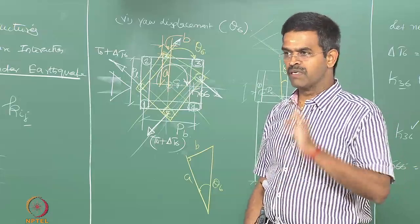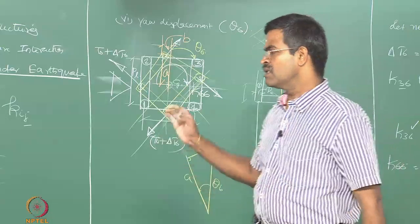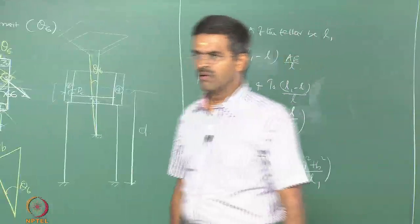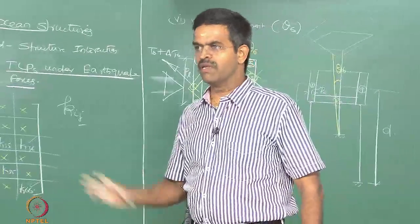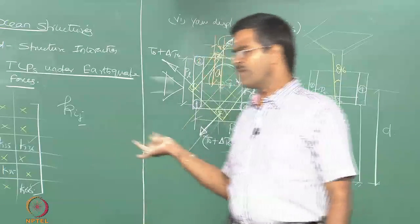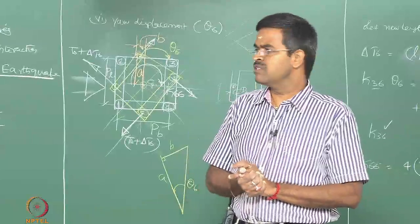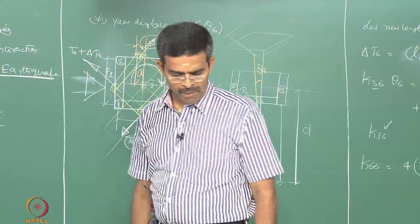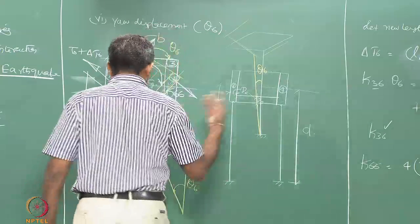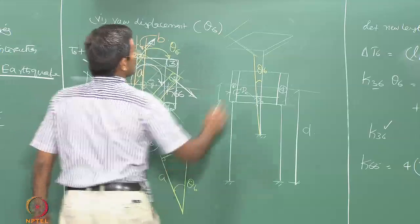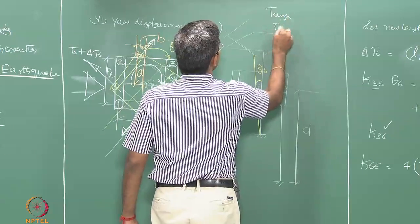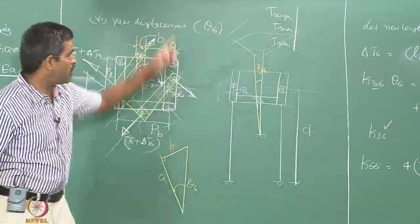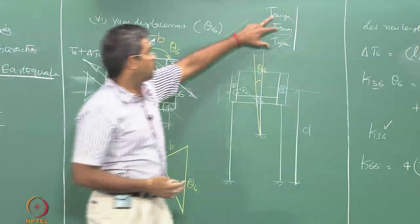Therefore, it is very interesting from the design perspective: TLPs will never get into the resonance band at all. TLPs will never be in resonance. But how do TLPs fail? That is what we will discuss. Because it is a sweeping omega, TLP natural frequencies in surge, sway, and yaw are all in the horizontal plane — they are highly flexible, meaning large period, about 80 to 120 seconds.